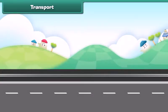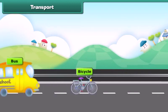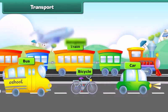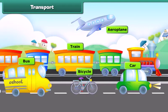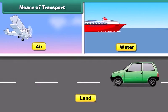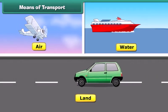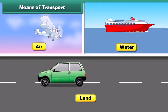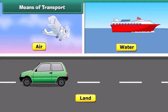Dear friends, we all go from one place to another by different vehicles like bicycle, bus, car, train and airplane. The movement of people and goods from one place to another is called transport. Do you know that transport is carried out through various modes such as land, water and air?